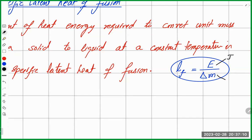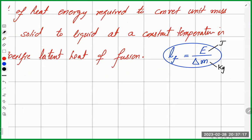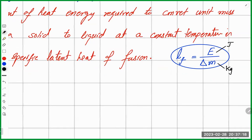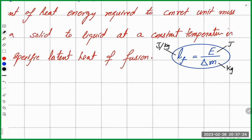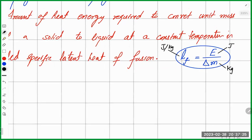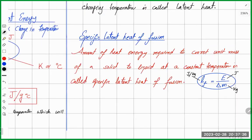Energy is in joules, and mass is in the standard unit kilograms, but it can also be grams. So latent heat of fusion will be in joules per kilogram or joules per gram.